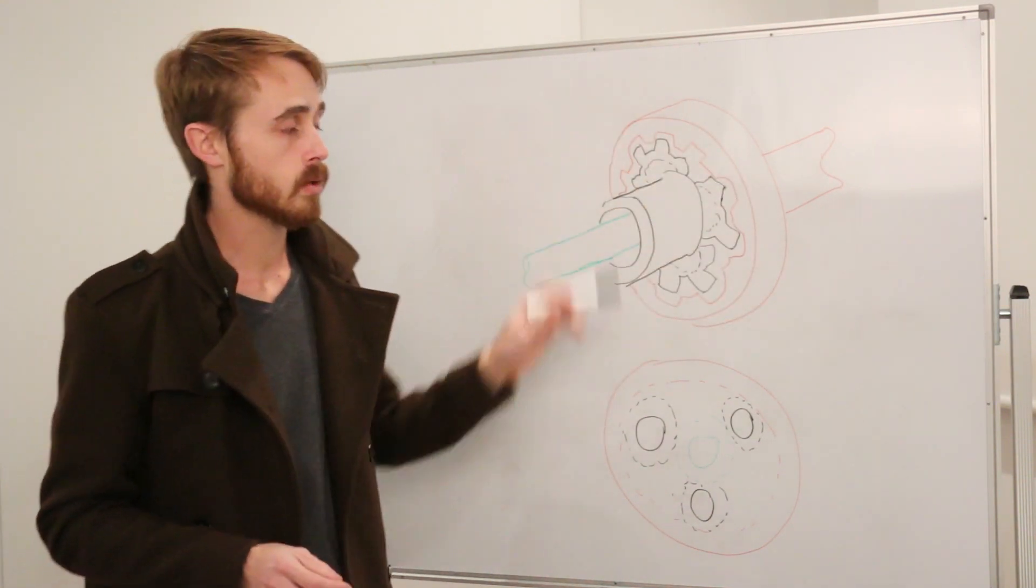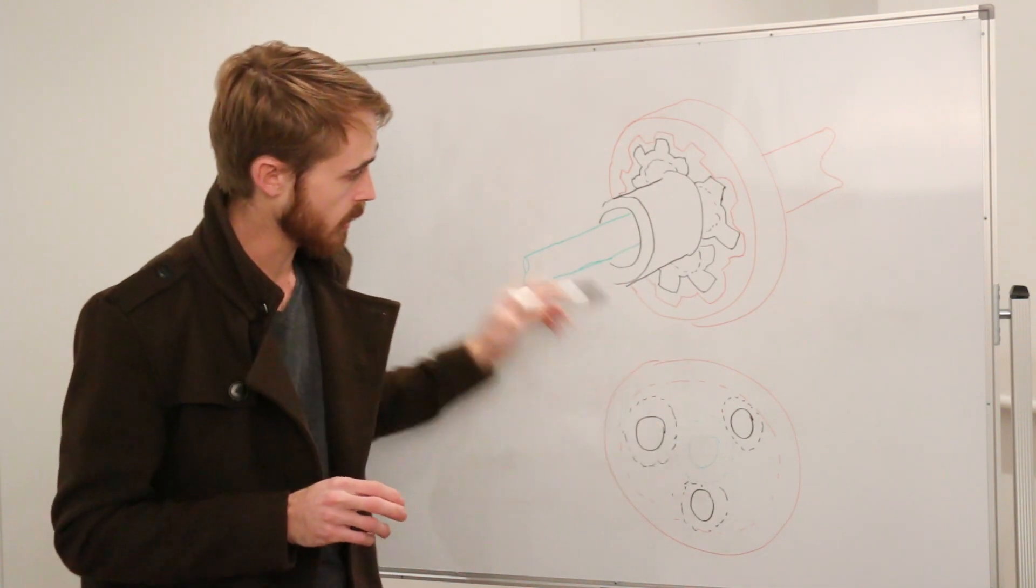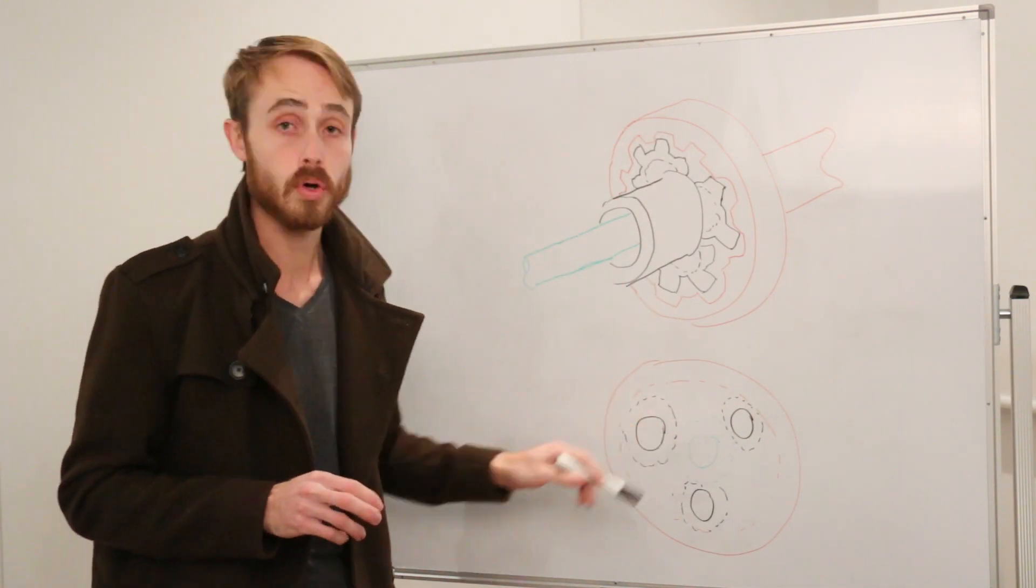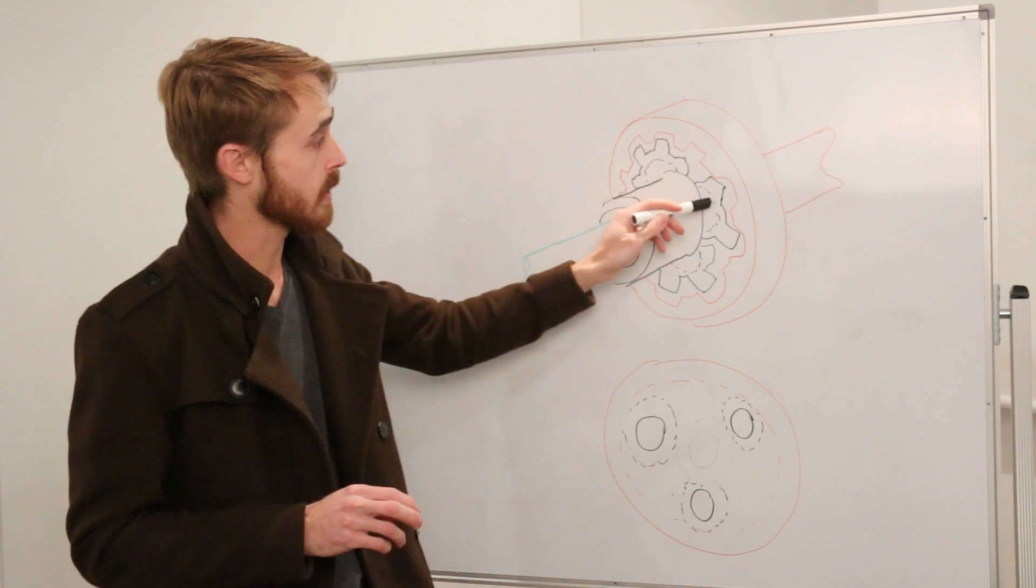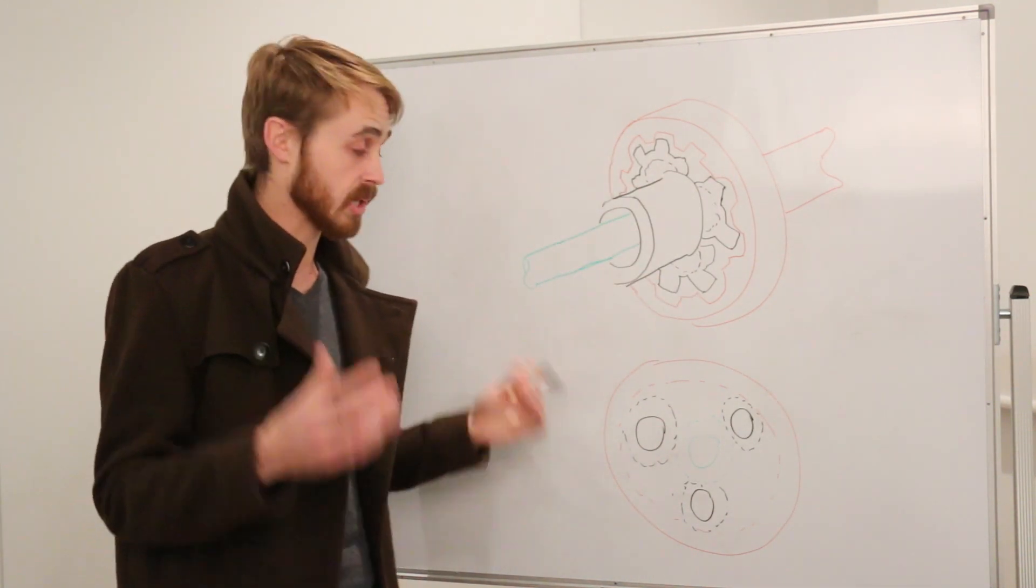So we have this outer gear here called the ring, then we have a central gear where the green shaft goes to called the sun, and then these black gears here are called the planet gears. So it's a planetary gear set.